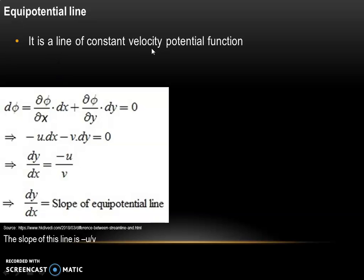An equipotential line is a line of constant velocity potential function. d phi can be written as (∂φ/∂x)dx + (∂φ/∂y)dy = 0. Since ∂φ/∂x = -u and ∂φ/∂y = -v, we get -u·dx - v·dy = 0. So we can write dy/dx = -u/v, which is the slope of the equipotential line.